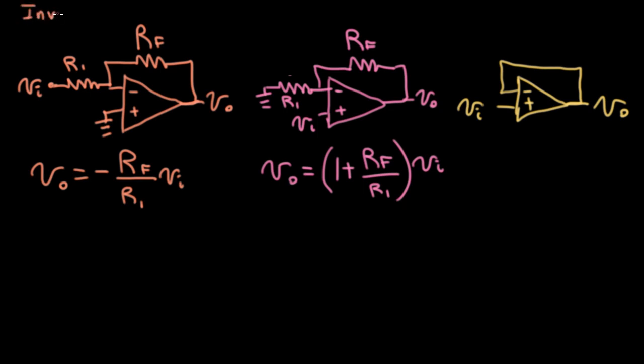So unsurprisingly, we call the circuit on the left an inverting amplifier. And we call the circuit in the middle here a non-inverting amplifier. Another thing to notice is that this RF over R1 factor can be less than 1, so the gain can actually be attenuating. Whereas for the non-inverting amp, this factor is bigger than 1. So it has to be a true gain, I guess you could call it.